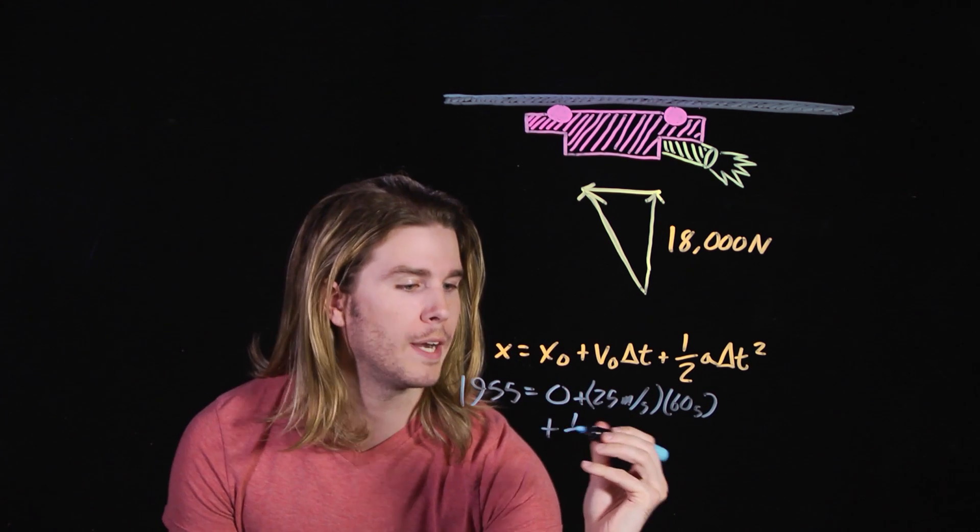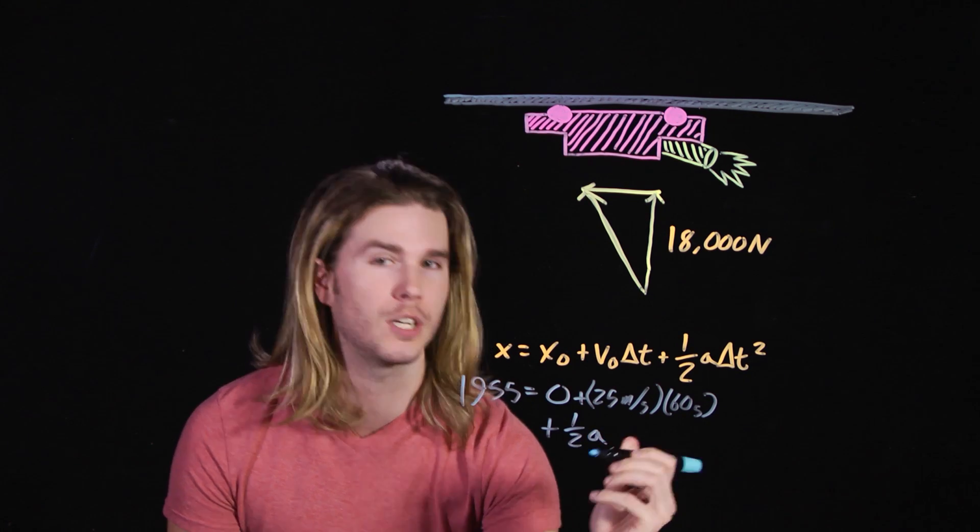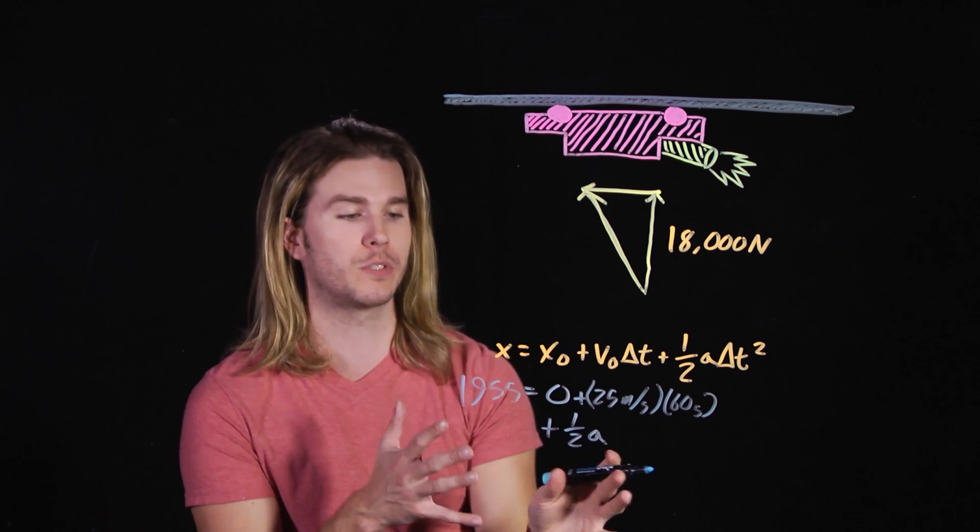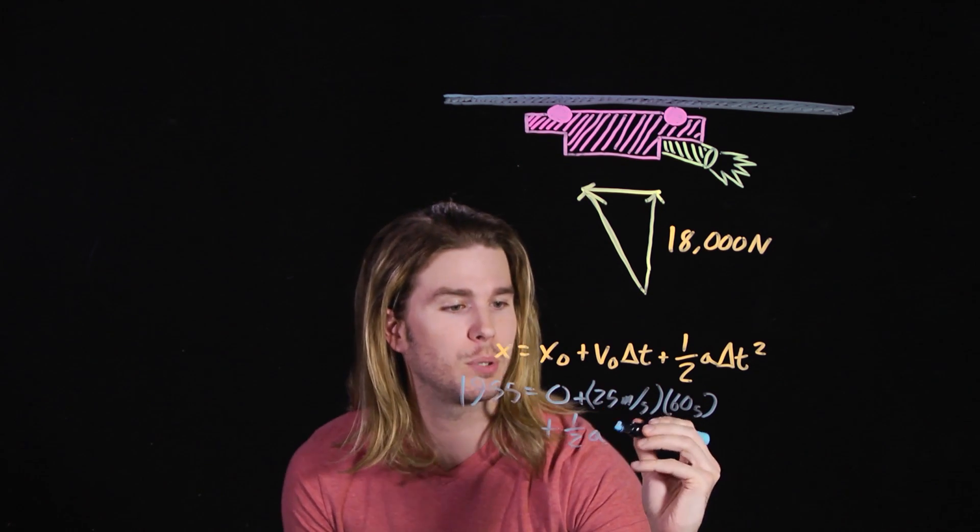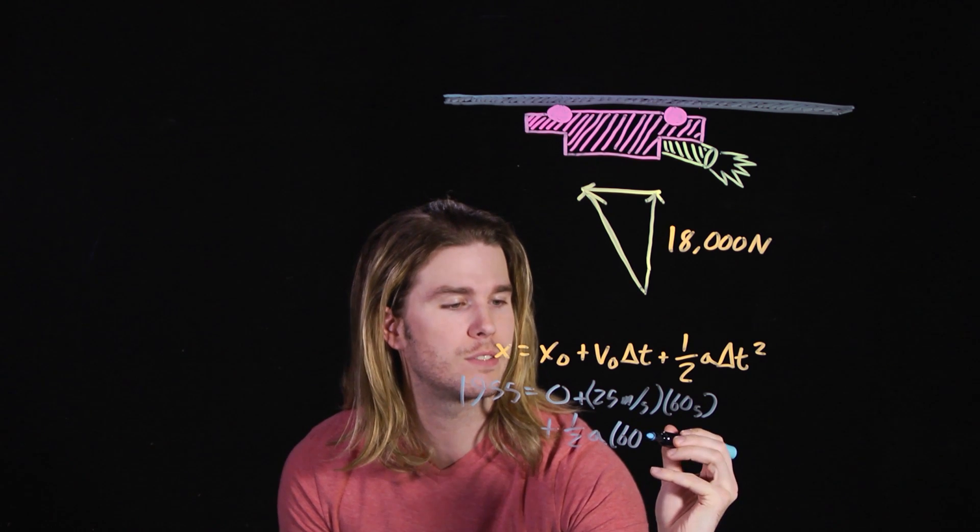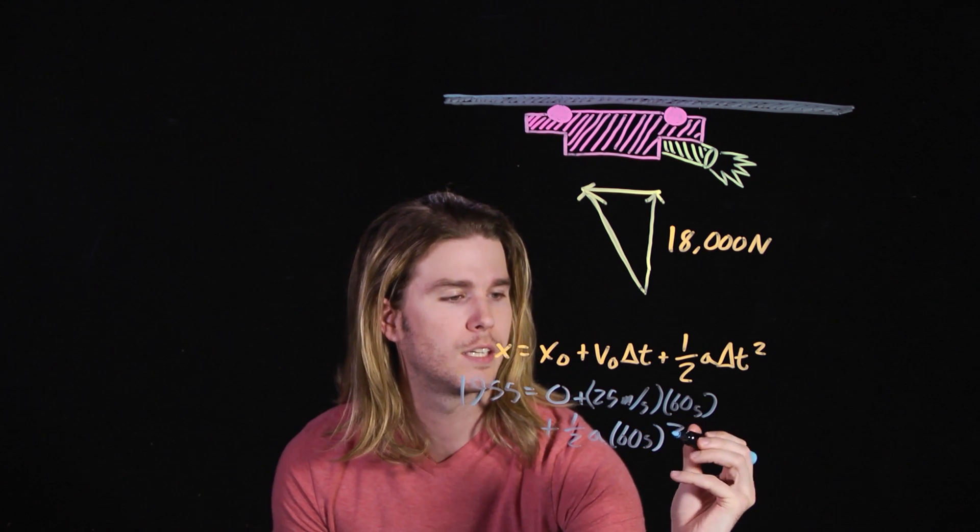Plus one half times the acceleration of the car during this sequence, which is what we want to find, multiplied again by the time it took to do it, or 60 seconds, squared.